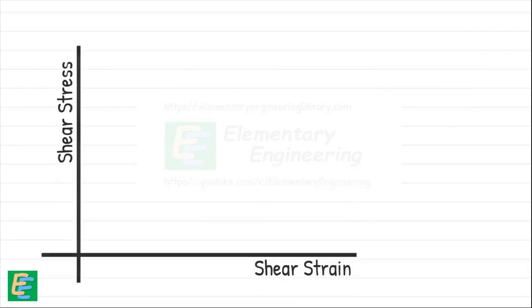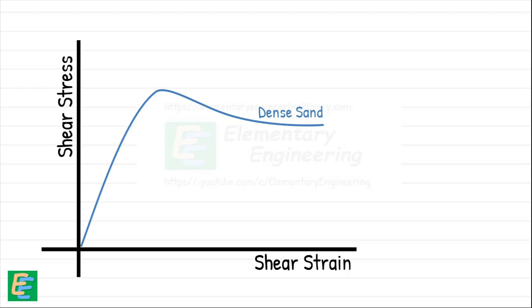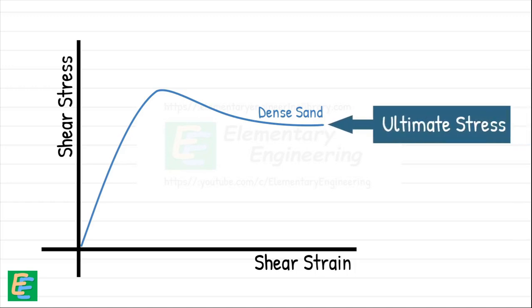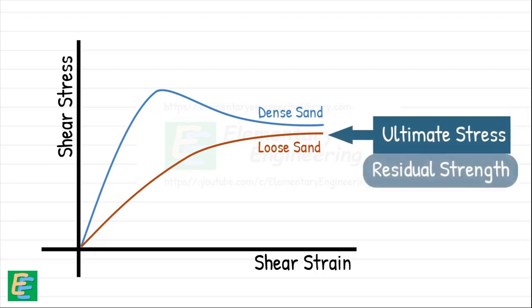Using this data, we plot the stress-strain curve. For dense sands, shear stress reaches a peak at a small strain, meaning the soil can handle a high force initially. As strain keeps increasing, the shear stress decreases slightly and becomes more or less constant, known as ultimate stress, which is important for long-term stability. For loose sands, shear stress increases gradually and then attains a constant value known as the ultimate stress or residual strength.